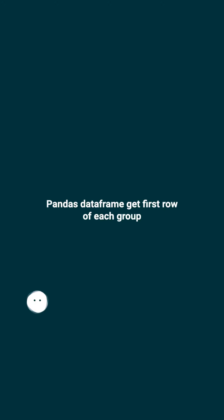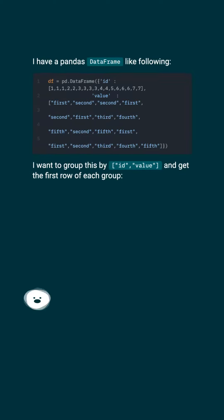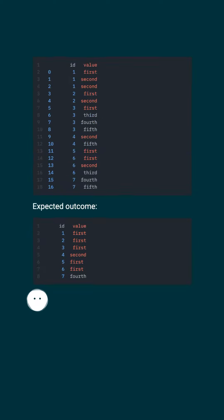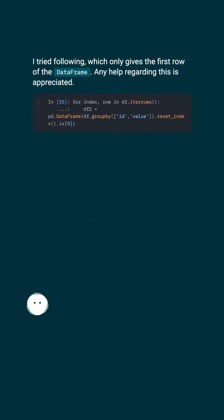Pandas dataframe: get first row of each group. I have a pandas dataframe, and I want to group it by the id value and get the first row of each group. The expected outcome is shown. I tried a method which only gives the first row of the entire dataframe. Any help regarding this is appreciated.